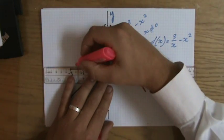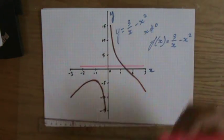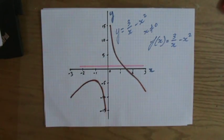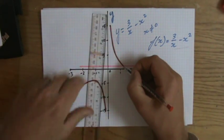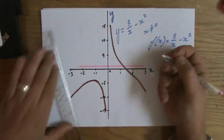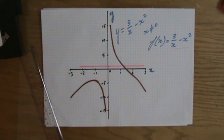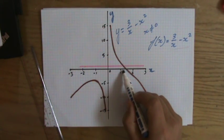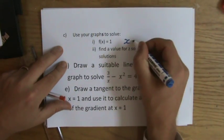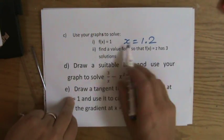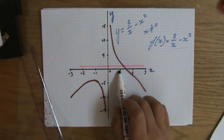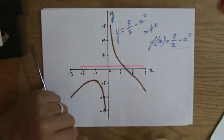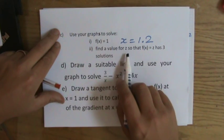The question says use your graph to solve f(x) = 1, so I'm going to draw a horizontal line and see where my function equals 1. I'm going to draw a dotted line, and we can see that at x = 1.2, f(x) = 1. Each tiny block is 0.2, so one, two, three, four, five blocks gives us 1.2.